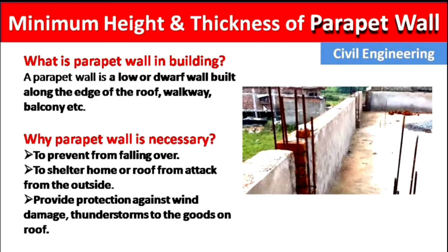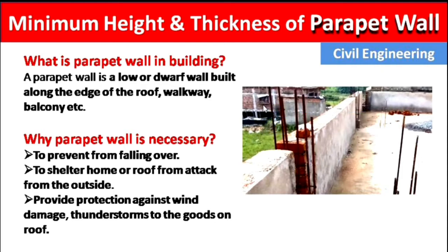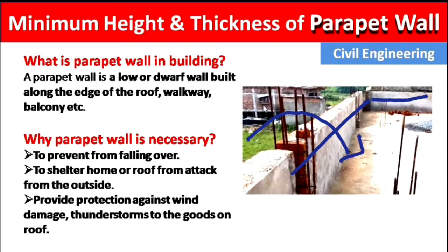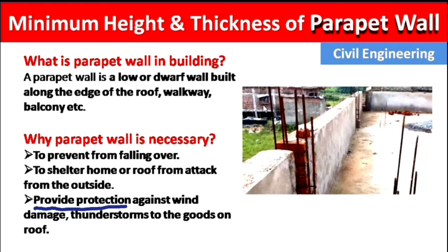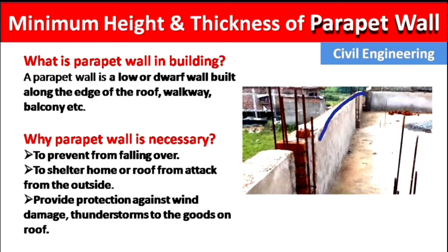Why is a parapet wall necessary? First, to prevent people or animals from falling over the edge of the roof. Second, to shelter the home or roof from attack from outside — if we provide a parapet wall, it will be difficult for thieves to enter. Third, it provides protection against wind damage and thunderstorms to goods on the roof.